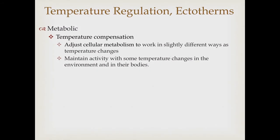Sometimes ectotherms just can't maintain homeothermy because microhabitats aren't variable enough. So instead they do what's called temperature compensation — adjusting how their metabolism works, using different mechanisms and different enzymes in different circumstances. Some enzymes work well at lower temperatures, others at higher temperatures, and they use the appropriate one in each circumstance, maintaining activity despite changes in environmental temperature.